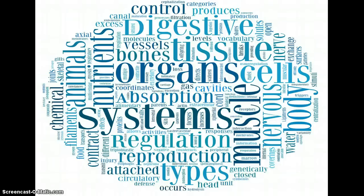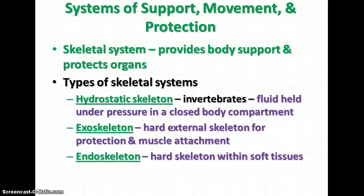As we continue our study of body systems, we'll now focus on the systems of support, protection, and movement. The first one we'll talk about is the skeletal system, which provides body support and protects the organs. Throughout the animal kingdom, there are several different kinds of skeletons. In some invertebrates, like cnidarians and some of the worms, we have a hydrostatic skeleton — fluid under pressure in a closed body compartment that gives structure and support to these very soft-bodied animals.